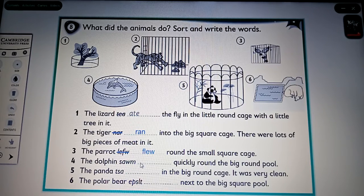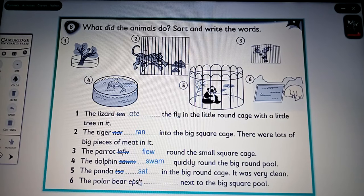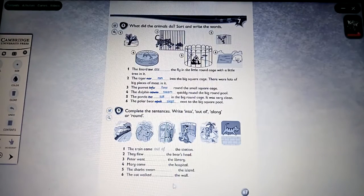Number 4. The dolphin. What is it? Swam quickly round the big round pool. Number 5. The panda. What is it? Sat in the big round cage. It was very clean. Finally. The polar bear. Yes. What is it? Slept next to the big square pool. Okay.